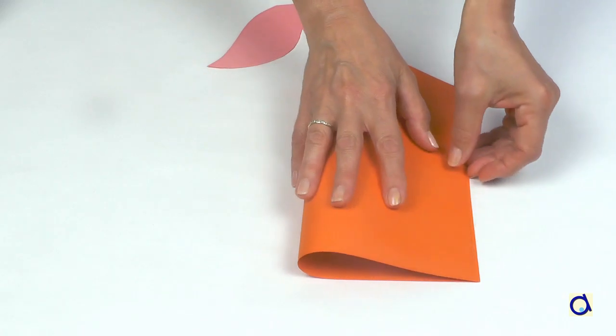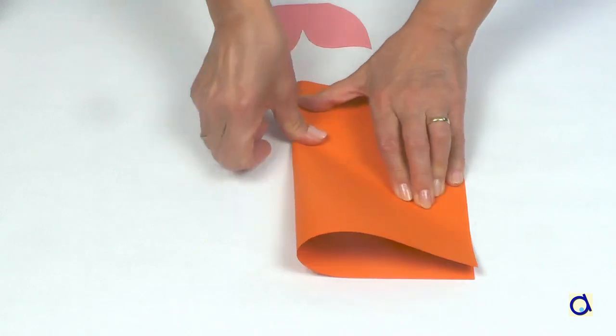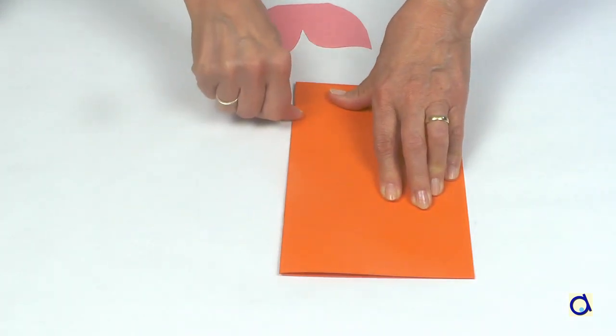You will find the patterns in the supporting document. Choose one sheet of the coloured construction paper to make the wings and fold it in half.